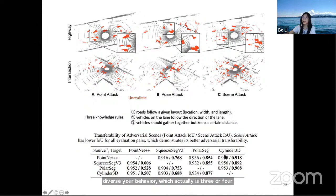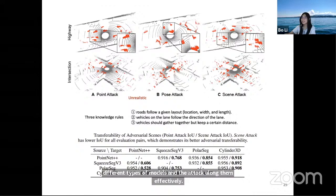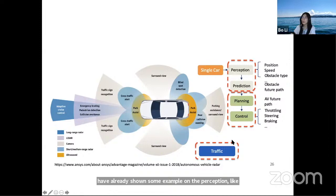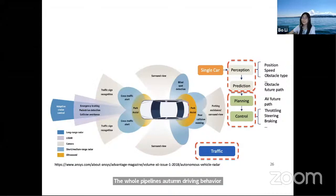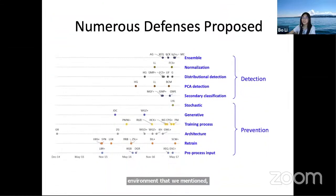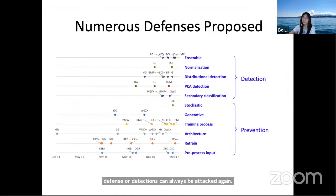This shows that from different levels — perception, planning, and traffic-level, whether through slowdown or high-level traffic scenarios — attacks can always compromise autonomous driving pipelines. This sounds pessimistic, but the key question is: how do we defend or ensure safety in these adversarial environments? There are many empirical methods to improve robustness, but one limitation is that such defenses or detections can always be attacked again by adversaries who know the detection method, forming a cat-and-mouse game in the security domain.